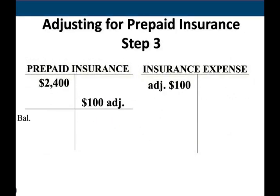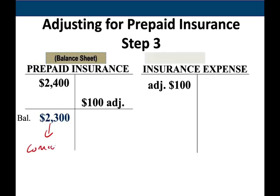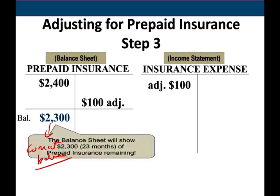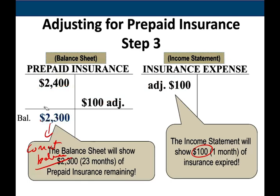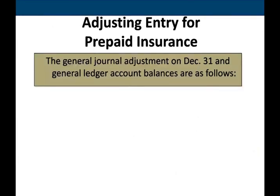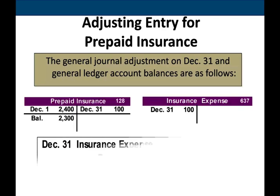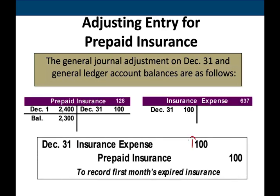After the adjustment, the balance in prepaid insurance is $2,300, which is the correct balance, and the balance in insurance expense is $100, which is also correct. Without this adjusting entry, prepaid insurance would be overstated at $2,400 and insurance expense would be understated at $0 — understated by $100. So without the adjustment, we debit insurance expense and credit prepaid insurance to properly reflect the expired amount.